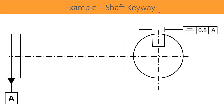We can confirm that position can be used instead of symmetry very effectively. Now let us take a practical example of symmetricity shown on a drawing of a shaft. The shaft axis is datum A, and the keyway slot is controlled for symmetricity with a 0.8 tolerance with respect to datum A. We will now see the differences when measuring this slot as symmetricity versus with a position tolerance.